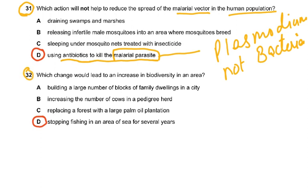Coming to question 21: which change would lead to an increase in biodiversity in an area? Building large blocks of family dwellings cuts down the forest — that decreases biodiversity. Increasing the number of cows in a pedigree herd is just increasing one type of cow. Replacing a forest with large palm oil plantations creates a monoculture and kills birds. Stopping fishing in an area of sea for several years is correct, because fish populations would recover.